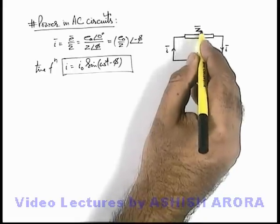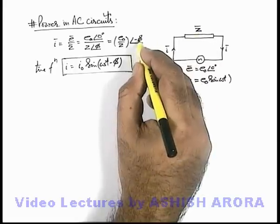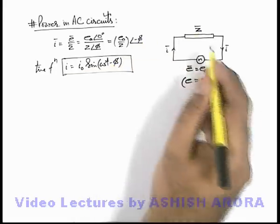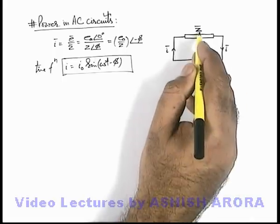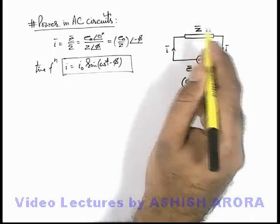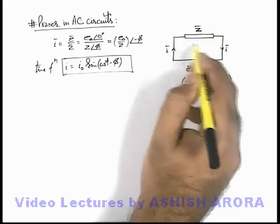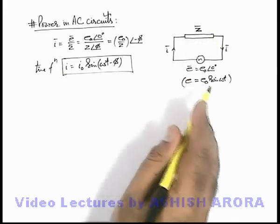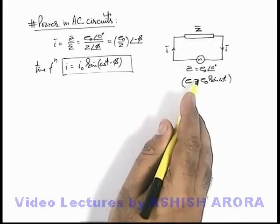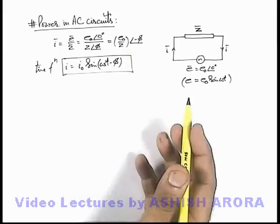If it is more inductive then it'll be having a negative phase for current, current will lag behind. And if impedance will be having more capacitive reactance, in that situation it'll have a tendency to keep current ahead of EMF in phase. That depends on the value of phi in case to case.